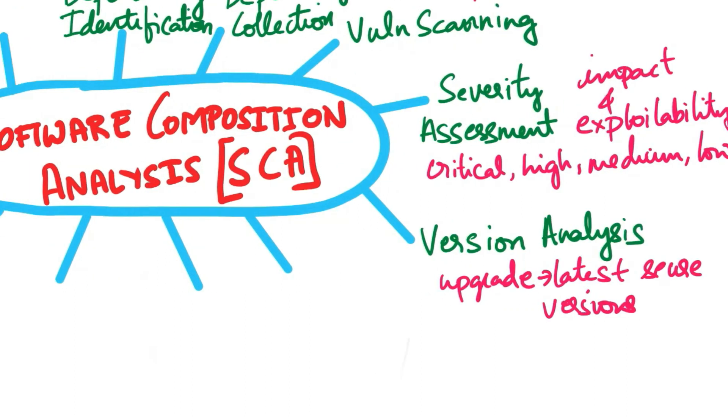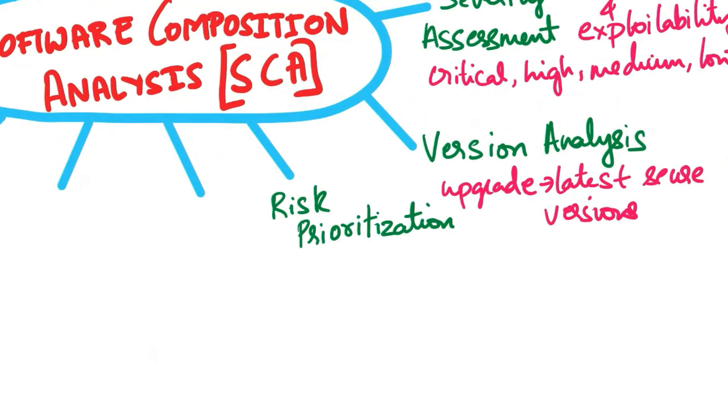The next step is risk prioritization. SCA tools prioritize identified vulnerabilities based on their severity and potential impact on the software. Critical vulnerabilities are often given the highest priority followed by high severity ones.